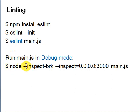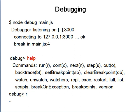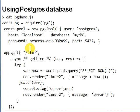To debug, run 'node inspect' on a breakpoint inspector port, running the debugger on main.js. You can use 'node debug main.js' — it listens on port 3000 and connects on a local debug port. Debug commands include: run, continue, step over (next), step into, step out, backtrace (stack trace), set/clear breakpoints, watch variables, restart, kill script, and break on exception.